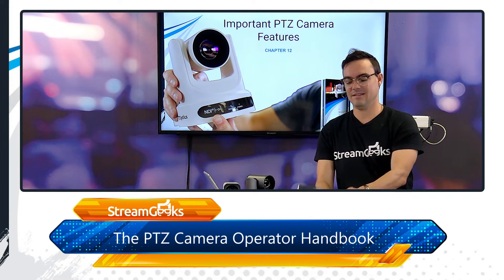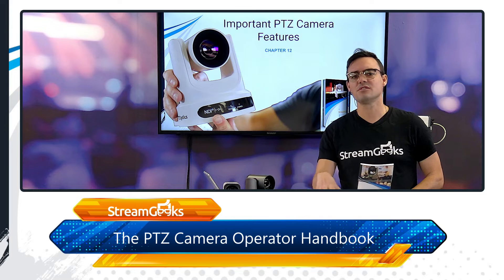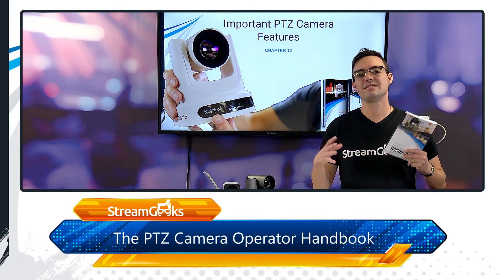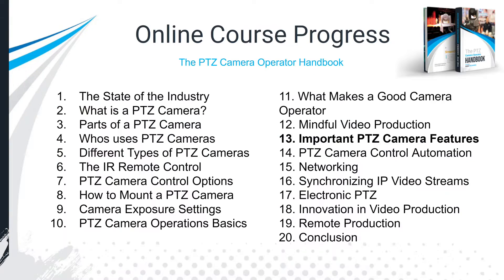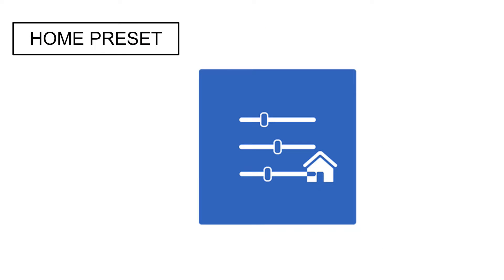Welcome back to the PTZ Camera Operator Handbook. In this chapter we're going to talk about the most important features for PTZ cameras — some you may know, some you probably don't. When you purchase a PTZ camera you're obviously looking for a quality lens, image sensor, motor, AV connections, a trusted brand with good warranty and support. But there are some presets and special things about PTZ cameras that are not so obvious.